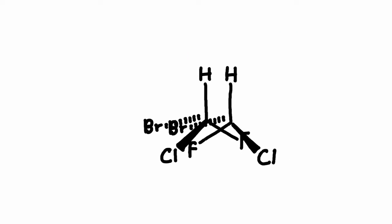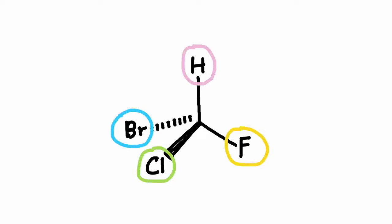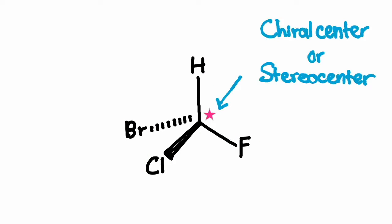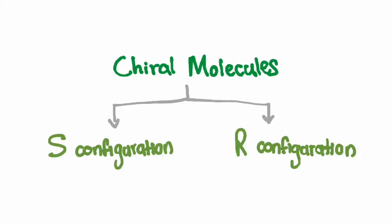Chirality often arises in a molecule with a carbon atom bonded to four different substituents. This creates what is known as a chiral center. A chiral center can also be referred to as a stereocenter. If you want to learn more about chiral molecules or chirality, you can watch our video on that topic by clicking the card on the top right-hand corner of the screen.